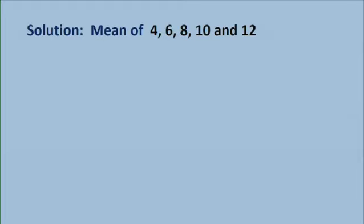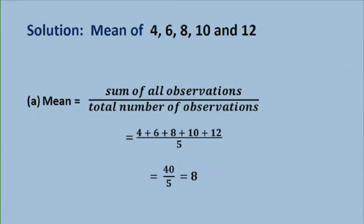So the solution for part A, the mean of 4, 6, 8, 10, and 12 will be: I need to add all these numbers, and in all we have five observations. 1, 2, 3, 4, 5. So I divide by 5. The sum is going to give me 40. 40 divided by 5, which is 8. So the mean of this set of numbers is 8.